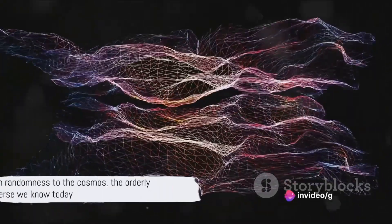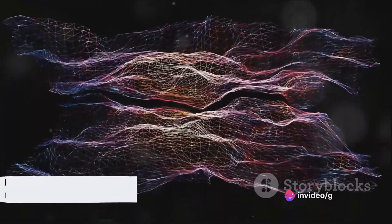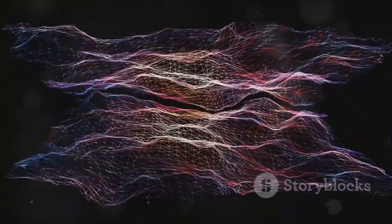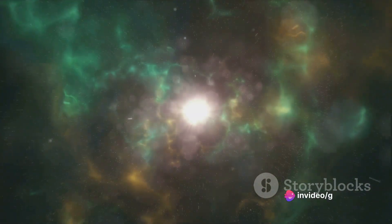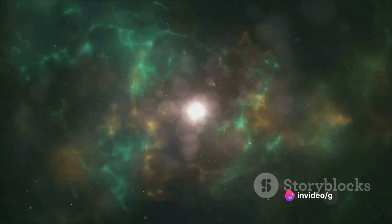So, we began in chaos. But how did we move from this randomness to the cosmos, the orderly universe we know today? The cosmos wasn't born in a day. It took billions of years for the universe to cool down and for matter to form galaxies, stars, and planets.